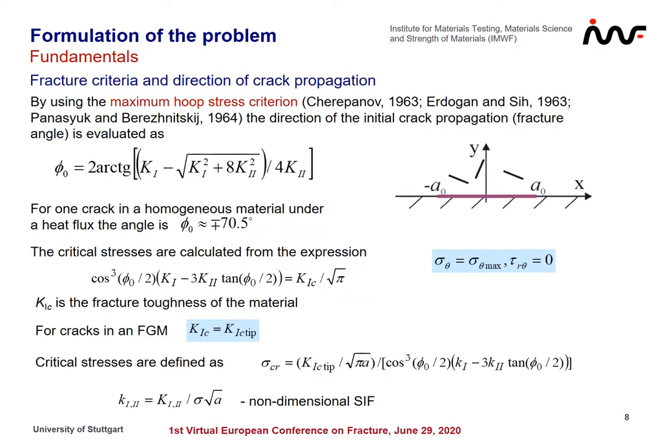After calculating stress intensity factors, using fracture criteria we can obtain the direction of crack propagation — so-called fracture angles — and critical stresses when this propagation occurs. We will use the maximum hoop stress criterion. It is important in this calculation to use fracture toughness at crack tips.